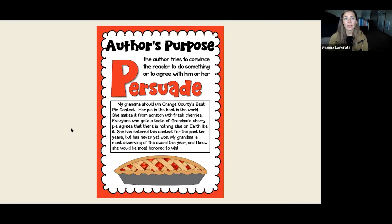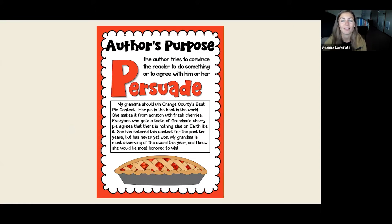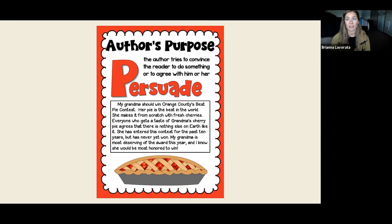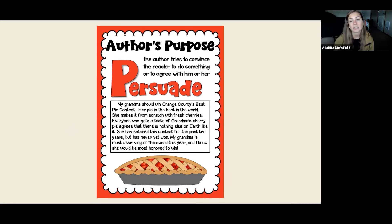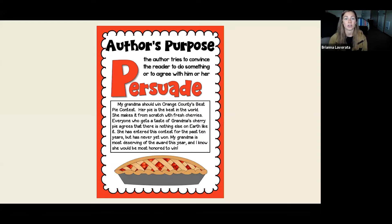Here's an example of persuading — this is when the author wants to try and convince the reader to agree with him or her. I'm going to model a persuasive example: 'My grandma should win Orange County's best pie contest. Her pie is the best pie in the world.' Here, someone is writing about their grandma and trying to convince us that her pie is the best. They give examples: 'She makes it from scratch with fresh cherries. Everyone who gets a taste of grandma's cherry pie agrees that there is nothing else on earth like it.'